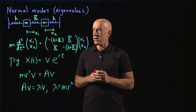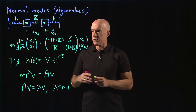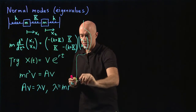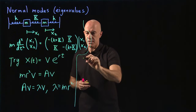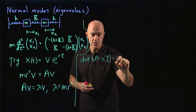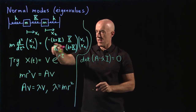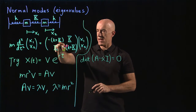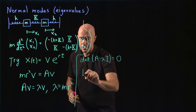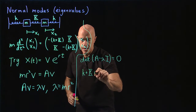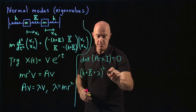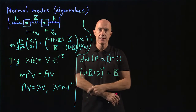Our first task in this video is to find the eigenvalues lambda. We have to do the characteristic equation: the determinant of A minus lambda·I equals zero. This is our matrix A — we subtract lambda from the diagonal and then take the determinant. The two diagonal terms are the same, and we'll end up with (little k + big K + lambda)² minus big K² equals zero. That is the characteristic equation.